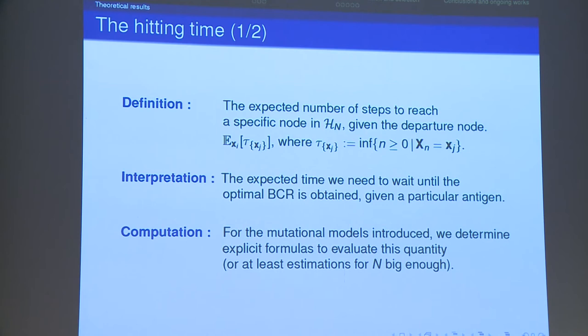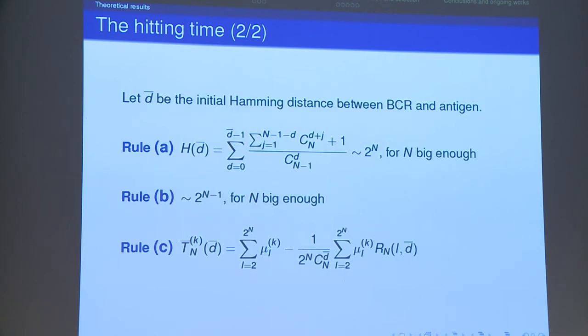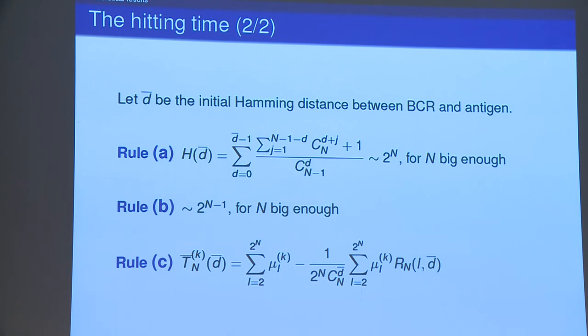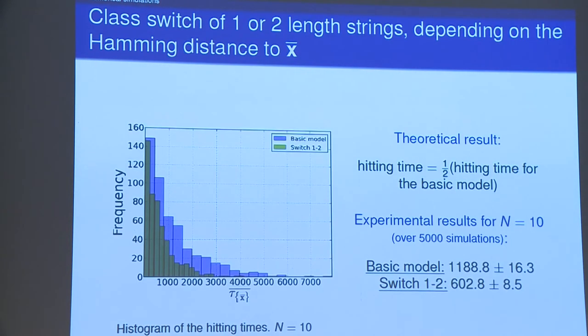The hitting time is defined as the expected number of steps we need to reach a specific position of the graph given the departure node. It has a clear biological interpretation: the time needed to obtain the optimal BCR given the naive BCR initially. And for the mutational models I introduced we were able to obtain explicit formulas to evaluate it or at least estimations for N being large enough. And so we can compare these different mutational models and their ability of exploring the state space. Here I summarize the main results we obtained for the three mutational models I introduced. We evaluated the mean hitting time to cover an initial Hamming distance d bar. And I conclude the first part with some numerical simulations.